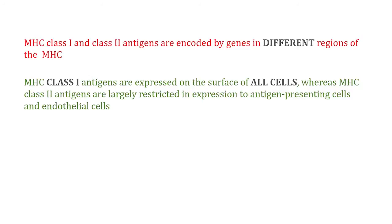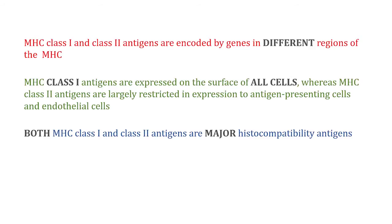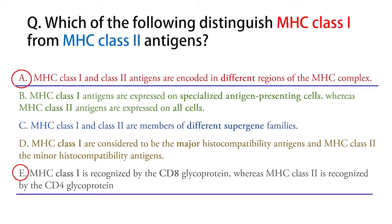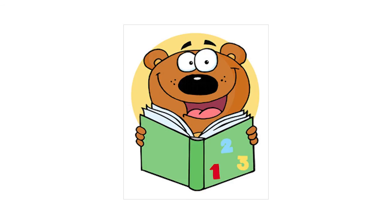MHC class 1 antigens are expressed on the surface of all cells, whereas MHC class 2 antigens are largely restricted in expression to antigen-presenting cells and endothelial cells. Both MHC class 1 and class 2 antigens are major histocompatibility antigens. MHC class 1 is recognized by the CD8 glycoprotein, whereas MHC class 2 is recognized by the CD4 glycoprotein. So except options A and E, all other options do not hold true.